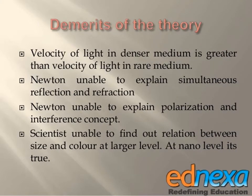The drawbacks of Newton's corpuscular theory: the velocity of light in a denser medium is predicted to be greater than the velocity in a rarer medium. Newton suggested that the velocity of light in a denser medium is higher compared to a rarer medium.